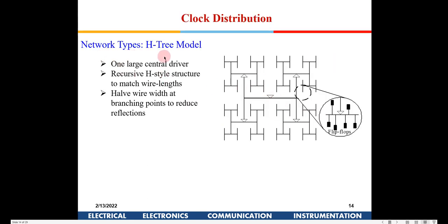One of the most popular topologies is known as the H-tree model. In the center of the chip, through a buffer, the signal is provided onto a line forming an H shape. There are four outputs from here, and again another H is formed, and at the end another H is formed. This is how the clock from the center is distributed — flip-flops connected at the same level will have equal delay.